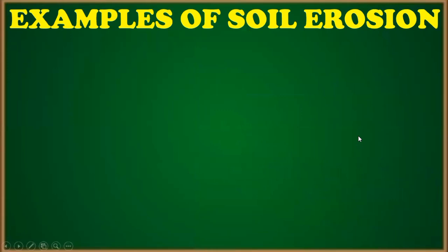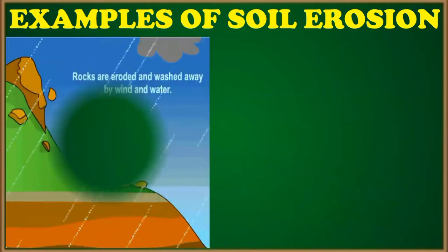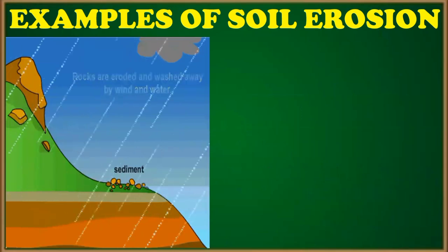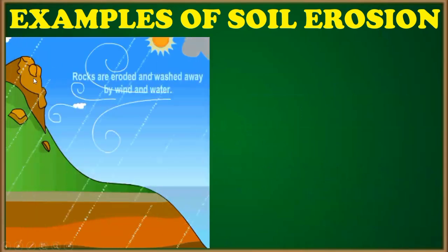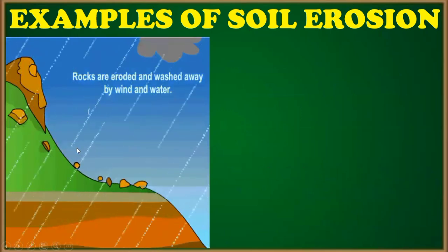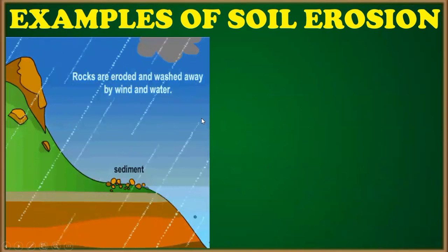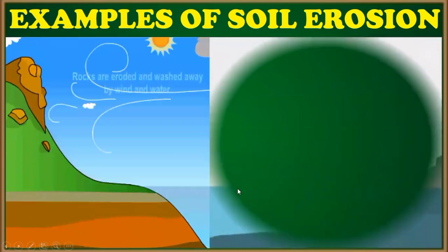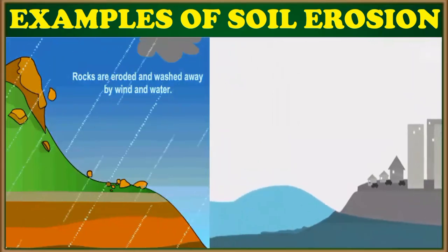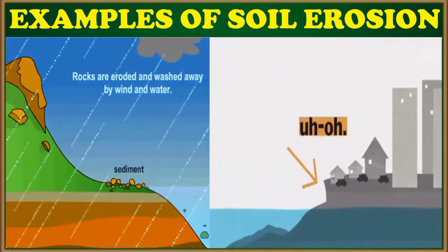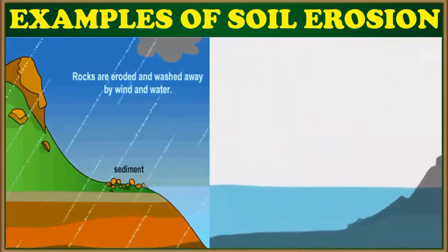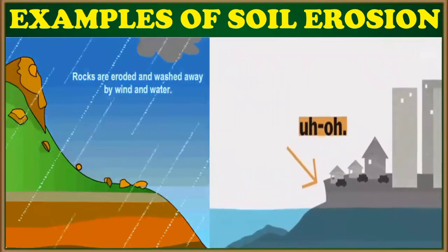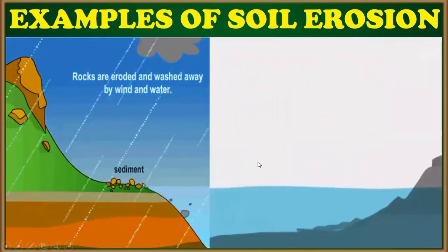There are some examples of soil erosion. The rocks are eroded and washed away by the wind and the water. The rocks are at the top of the mountain and slowly eroded or washed away by the wind, from the top going down to the bottom. We have another example here — this is also an example of soil erosion. As you can see, the water washed away the soil. That is an example of soil erosion.